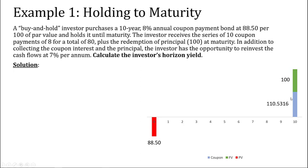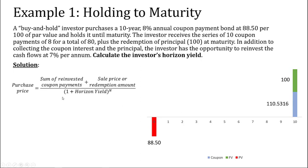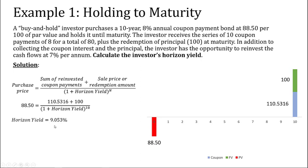The final cash flow at the end of the holding period is the redemption amount of $100. Now we calculate the horizon yield using the formula. The purchase price is $88.50, the sum of reinvested coupon payments is 110.5316, and the redemption amount is $100, so the future value is 210.5316. We discount it at the horizon yield for 10 years — our holding period. Working it out, the horizon yield is 9.053%. Using algebra: horizon yield = (210.5316 / 88.50) raised to the power of 1/10, minus 1, which gives 9.053%.